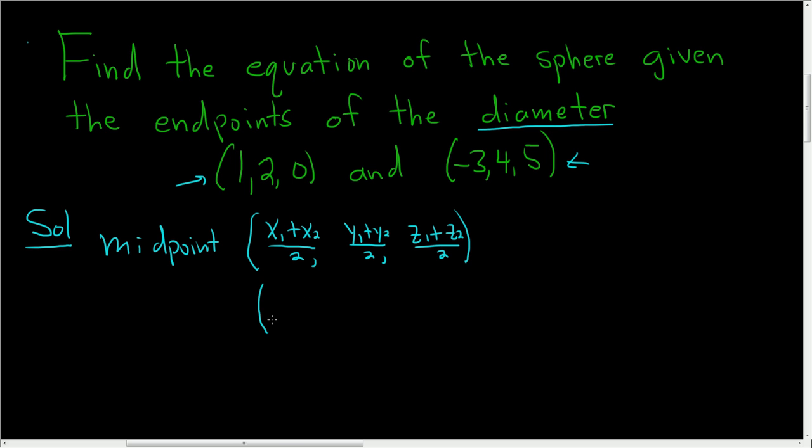So in this case, this is our first x coordinate, this will be x1 and this here could be x2. So you add them up. So 1 plus negative 3 and you divide by 2.